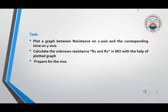The task for this experiment includes: first of all you have to plot a graph between resistance and corresponding time. Calculate the unknown resistances R1 and R2 with the help of plotted graph as I told in previous section. Then you have to prepare for the viva. Best of luck. Thank you.